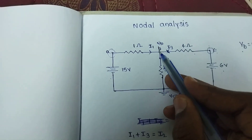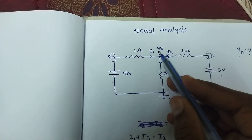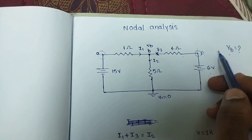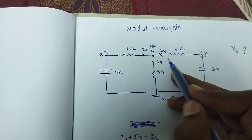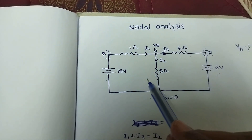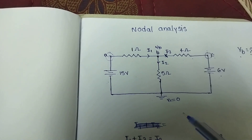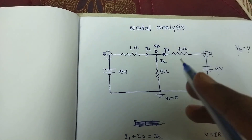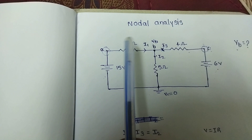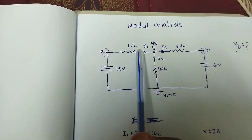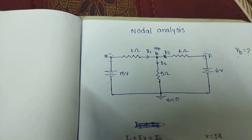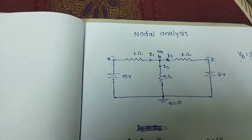We can find the VB voltage in this particular problem. First, observe the circuit. We can find two or more branches — these are branches — and the combination point is called a node. So we can find this particular node and find the VB voltage.